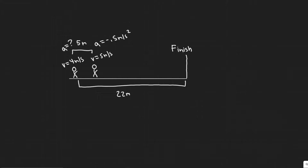In this problem we're told Mary and Sally are in a foot race. When Mary is 22 meters from the finish line, she has a speed of 4 meters per second and is 5 meters behind Sally, who has a speed of 5 meters per second. Sally thinks she has an easy win and decelerates at a constant rate of 0.5 meters per second squared to the finish line. What constant acceleration does Mary need during the remaining portion of the race if she wishes to cross the finish line side by side with Sally?